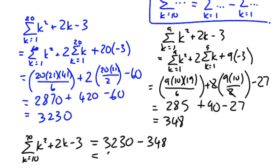which gives us a grand value of 2,882. So be careful if the first value of k is not 1, you're going to have to do two different values and find the difference between them.